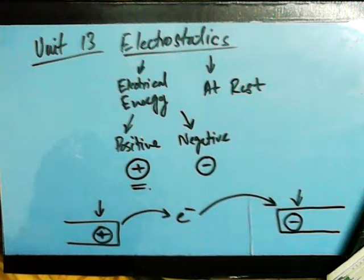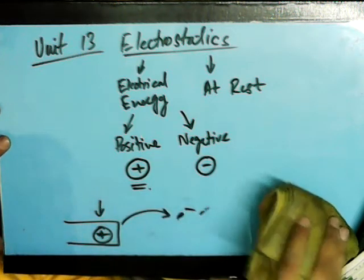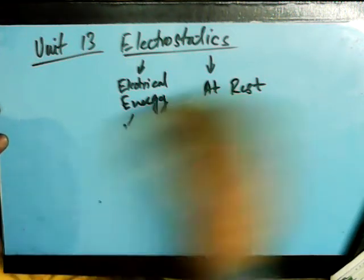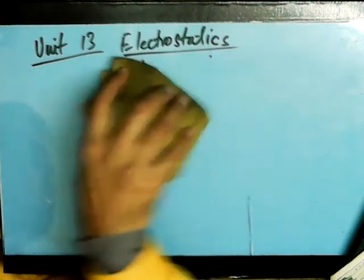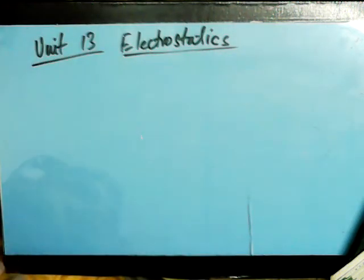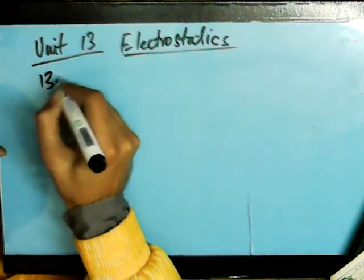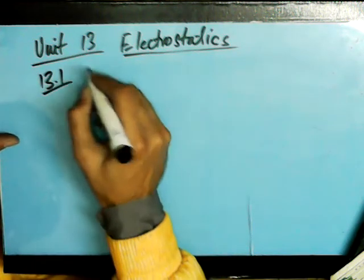This is just the understanding of what electrostatics is — how these charges are created, how they are produced, how they move around, and how they interact with the rest of the environment. Let's start with topic 13.1, which is actually on the production of charges — how can we understand that these charges do exist?